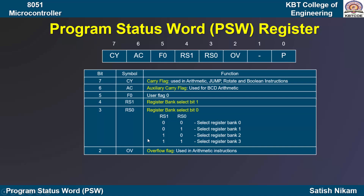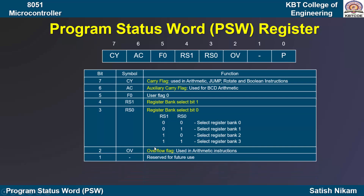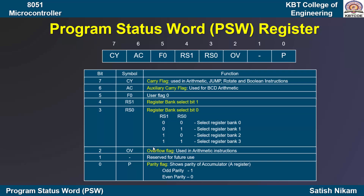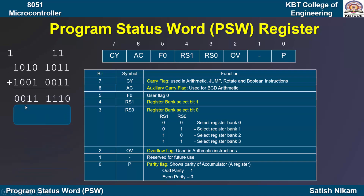The first bit is reserved for future use. The last bit, the zeroth bit, is the parity flag. The parity flag indicates how many ones are present in the accumulator (also known as the A register). If an odd number of ones are present in the accumulator, the parity flag will be 1. If an even number of ones or zero ones are present, the parity flag is 0. For understanding, let us consider an example: suppose we perform an addition and get a result stored in the accumulator.